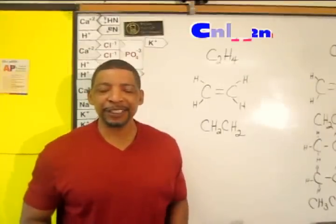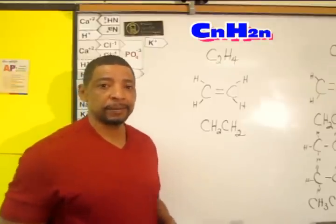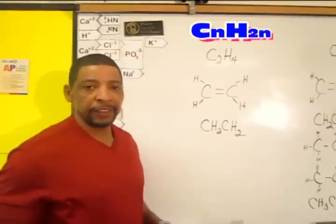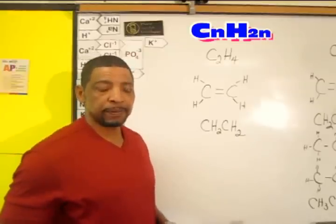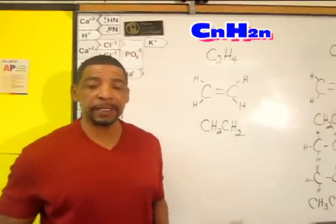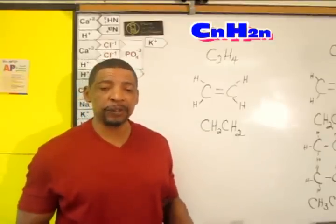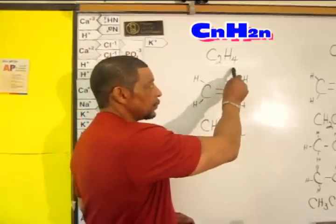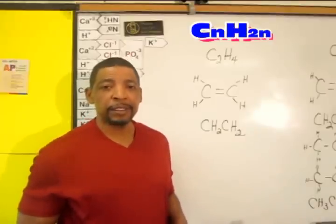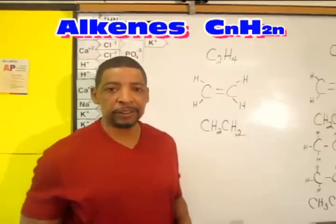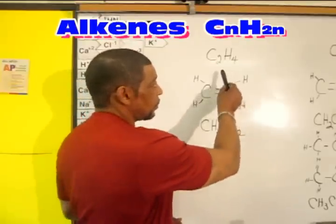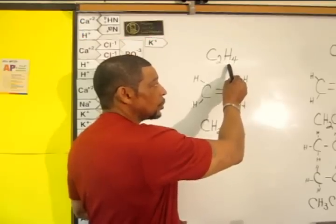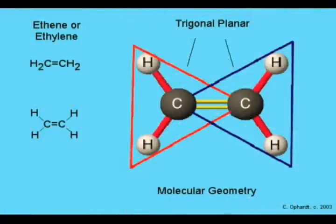The simplest unsaturated hydrocarbon compound is a compound known as ethene. This is the chemical formula for ethene: C2H4. There are two basic classes of unsaturated hydrocarbon compounds — the alkenes or the alkynes. Ethene is an alkene compound because the chemical formula C2H4 fits the general formula CnH2n, where N represents the number of carbon atoms. The structural formula shows two carbon atoms connected via a double covalent bond.